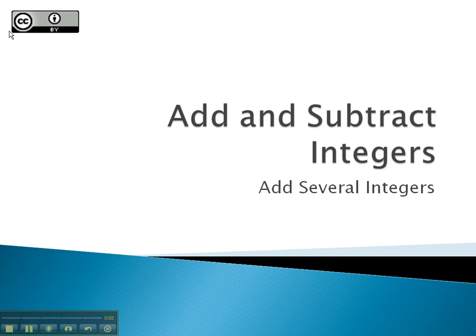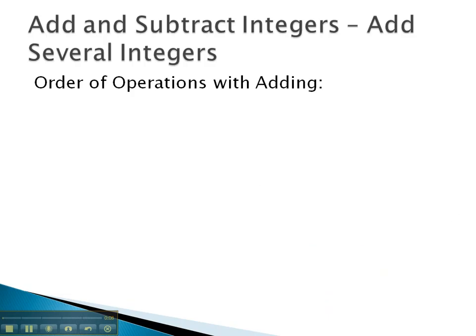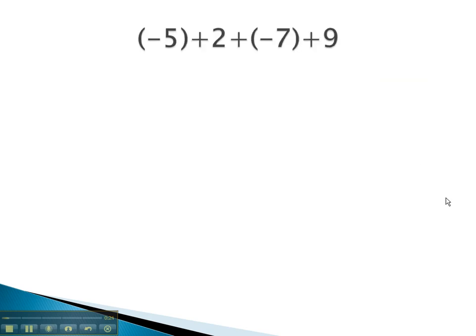In this video, we're going to take a look at how we can add several integers together in one problem. As we do, we're going to use a trick from order of operations, which tells us when we're adding several numbers, we need to work from left to right. So let's see if we can do a few problems working left to right, adding several integers together.